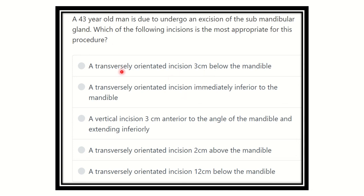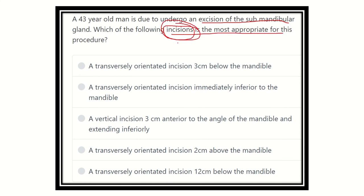Hello everyone, welcome to another question and answer session. A 43-year-old man is due to undergo an excision of the submandibular gland. Which of the following incisions is most appropriate for this procedure? The submandibular gland is located just below the mandible. We have to find out the incision to prevent any risk of injury to the different structures located around the submandibular gland and close to the mandible.